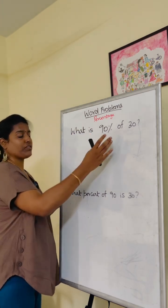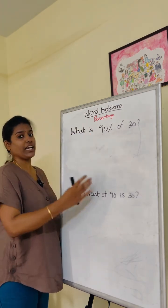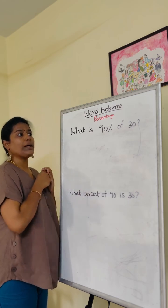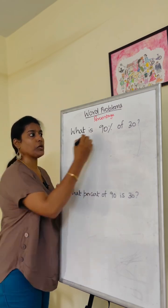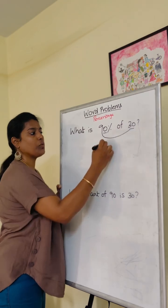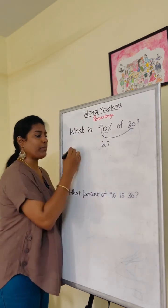What is 90% of 30 and what percent of 90 is 30? What is 90% of 30? You can write this as 90 by 100 times 30, so 9 times 3 is 27.